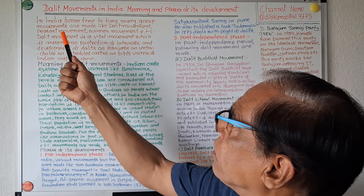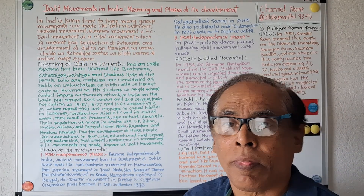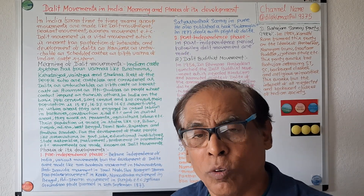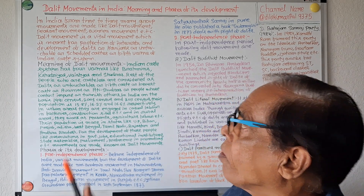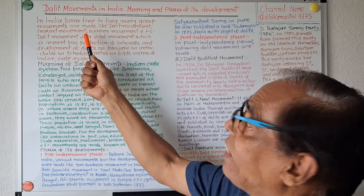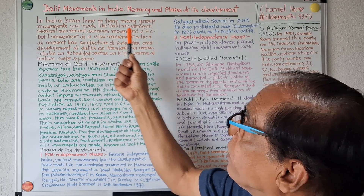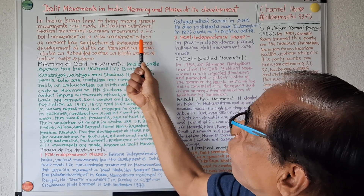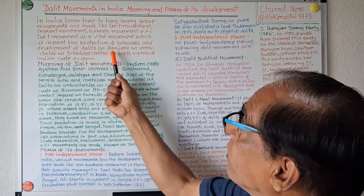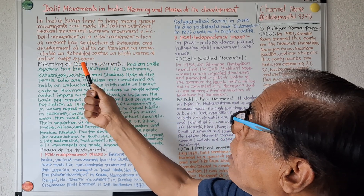Let us start. Meaning of Dalit movements in India. First, we will take up its meaning, then we will take up the phases of its development. In India, from time to time, many group movements are made, like Dalit movement, Kisan movement, Women's movement, etc. Dalit movement is a vital movement which is made for the protection of interests and development of Dalits, or Harijans, or Untouchables, or Scheduled Castes, or the fifth varna of the Indian Caste System.